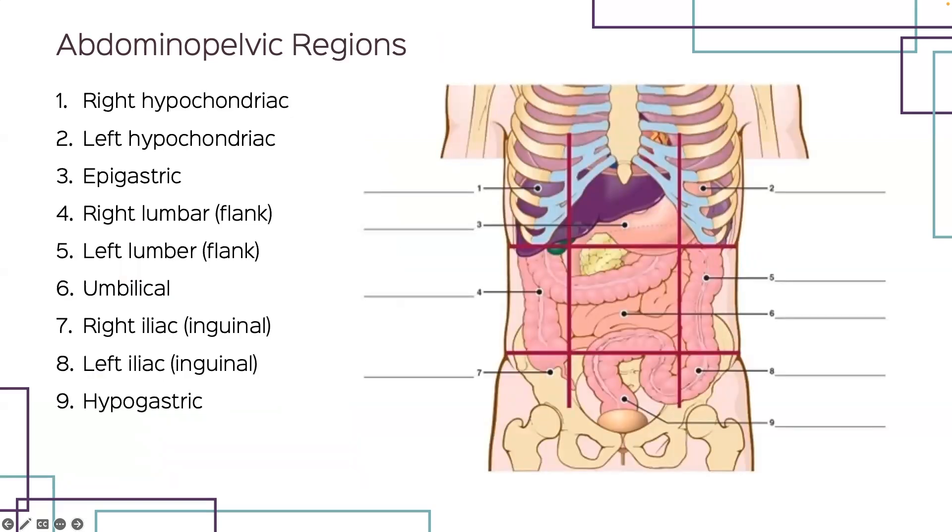A more precise way to divide the abdominopelvic cavity is into nine different abdominopelvic regions, kind of like playing a game of tic-tac-toe. Number one is the right hypochondriac, number two is the left hypochondriac, and number three is your epigastric in the middle on the top.